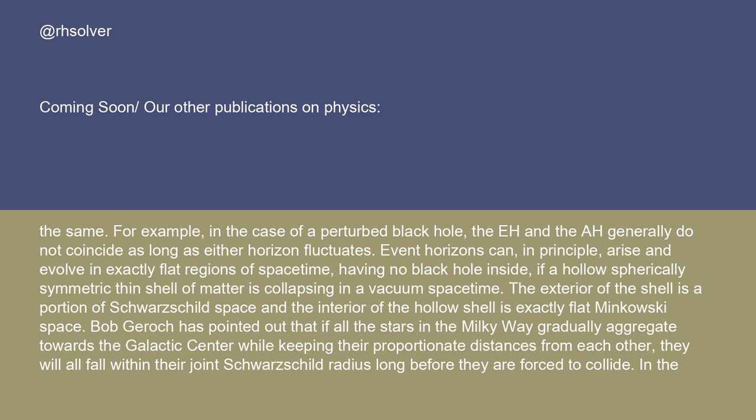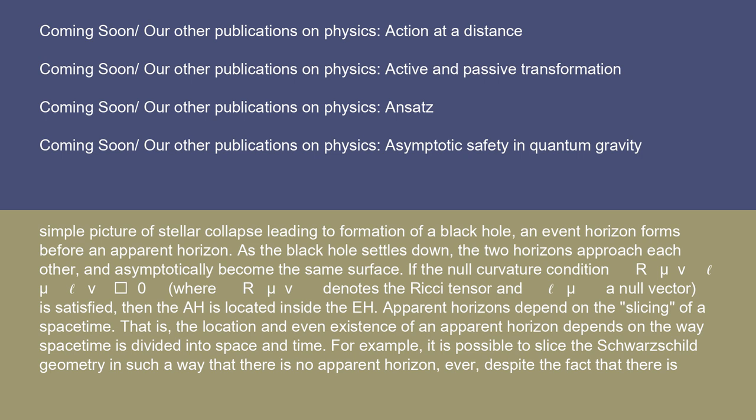The exterior of the shell is a portion of Schwarzschild space, and the interior of the hollow shell is exactly flat Minkowski space. Bob Jarek has pointed out that if all the stars in the Milky Way gradually aggregate towards the galactic center while keeping their proportionate distances from each other, they will all fall within their joint Schwarzschild radius long before they are forced to collide. In the simple picture of stellar collapse leading to formation of a black hole, an event horizon forms before an apparent horizon. As the black hole settles down, the two horizons approach each other and asymptotically become the same surface.